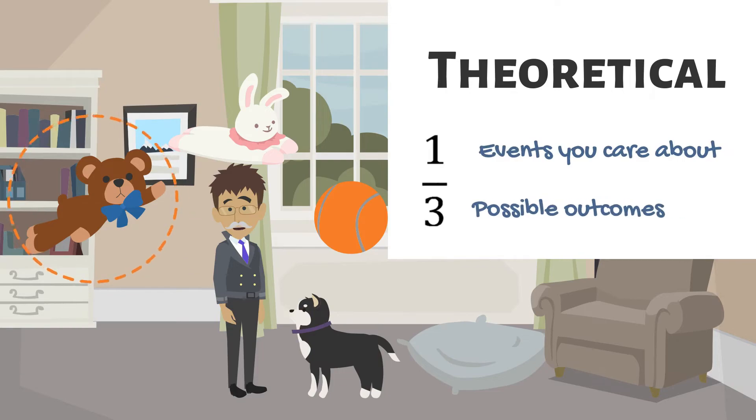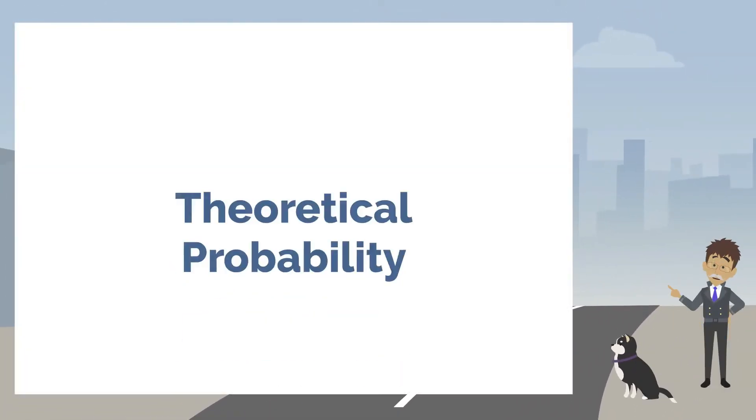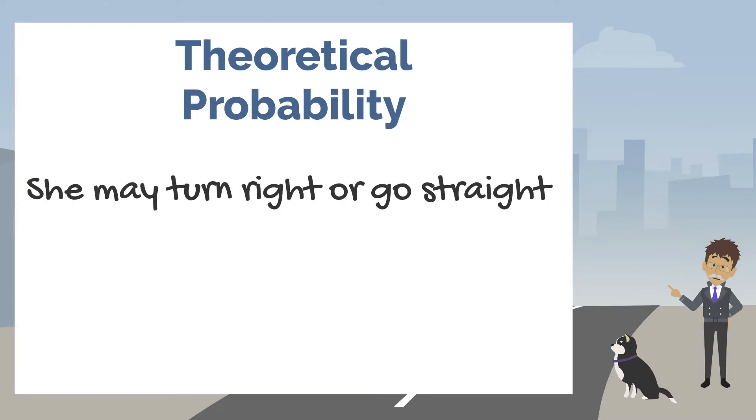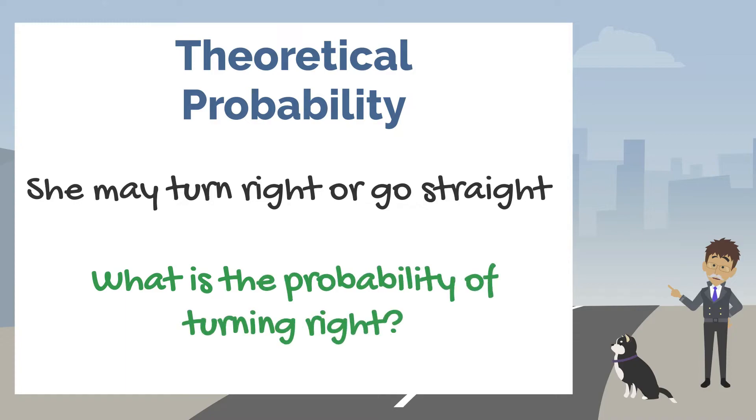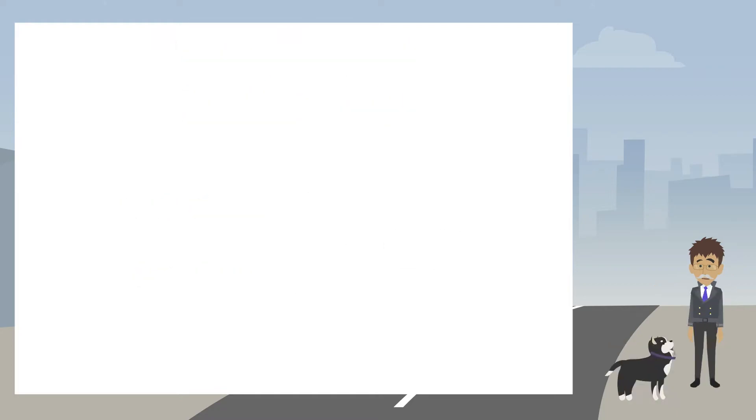Random always chooses between turning right or going straight when we leave home on our walkies. What is the theoretical probability of her turning right on today's walkie? Because there is one event we are paying attention to and two possible outcomes, the theoretical probability of random turning right is 1 over 2 or 5 tenths. On the other hand,